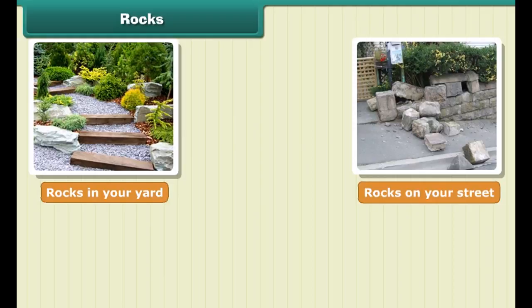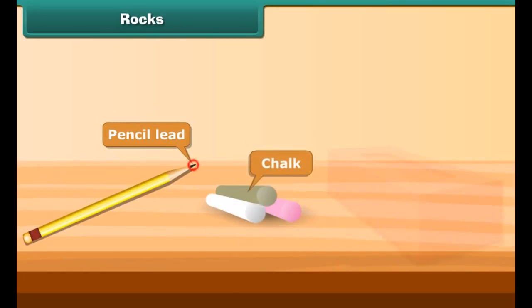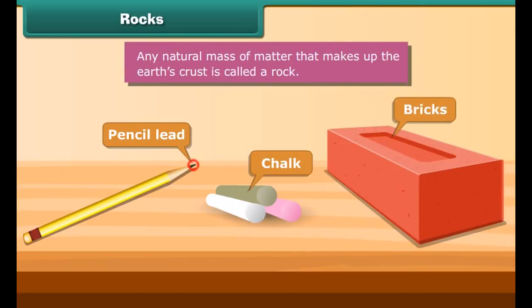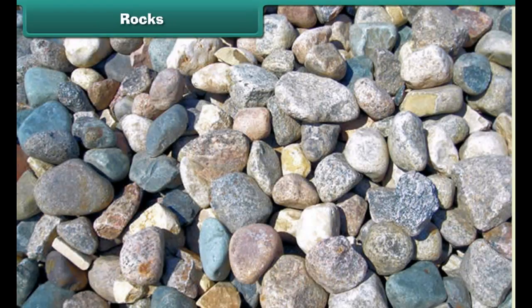Rocks are all around us. You can see rocks in your yard, on your street, on a road, everywhere you look. Pencil lead, chalk, and bricks are all rocks. Any natural mass of matter that makes up the earth's crust is called a rock. Do you know sand and mud are also rocks?